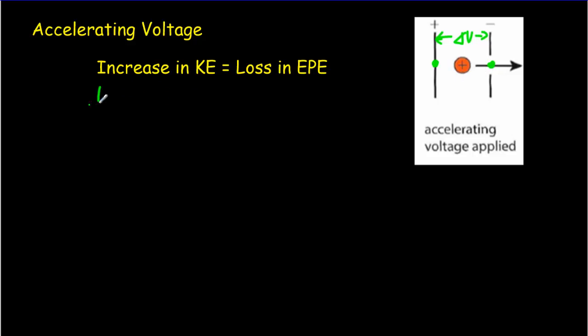So their increase in kinetic energy, assuming they start from rest, would be a half mv squared. That's coming from a loss in electric potential energy, which would be given by the charge on the ions times the voltage that they're accelerated through. If we do a little bit of rearranging, we can solve for the speed at the far side of the plates, and that will be given by 2qΔV divided by m. So the speed over on this side is going to be v if they started from zero speed.